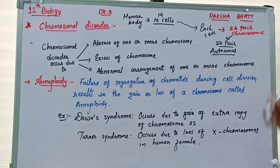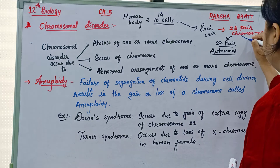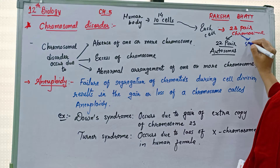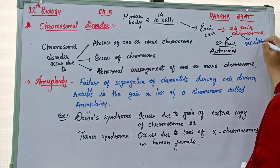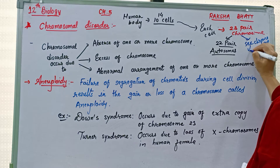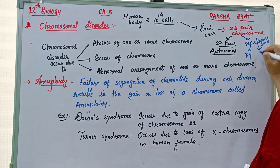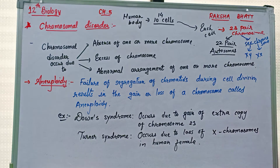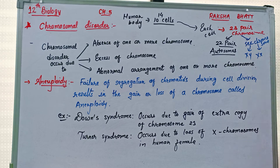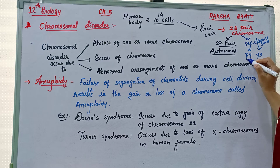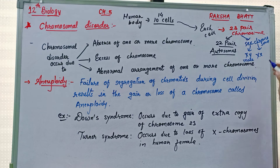Whereas the 23rd pair is different in male and female. It is known as the sex chromosome. In male it is XY and in female it is XX.